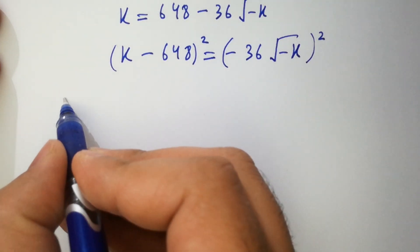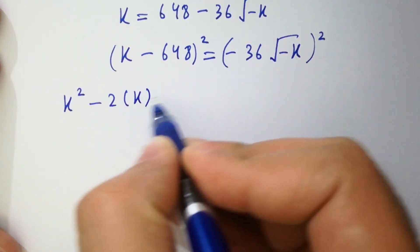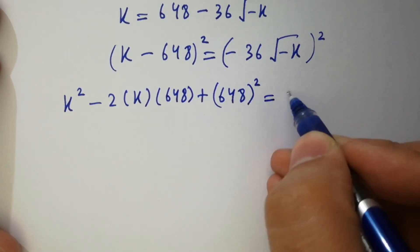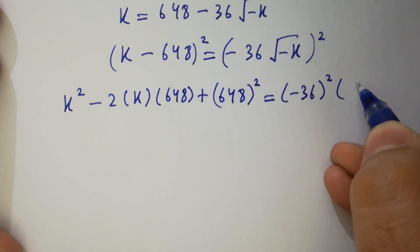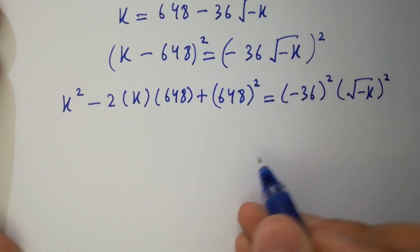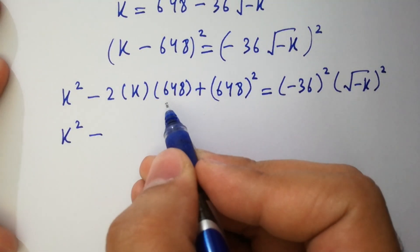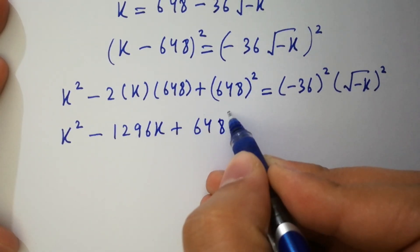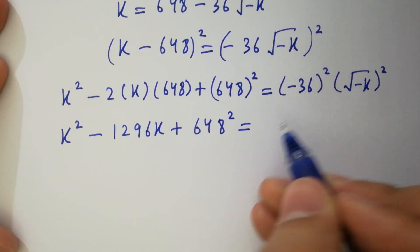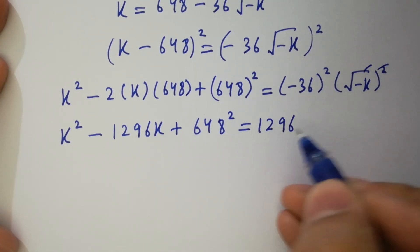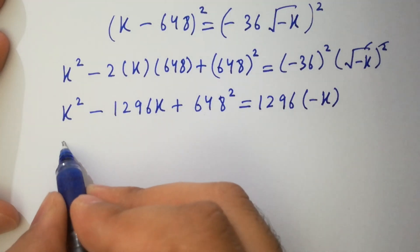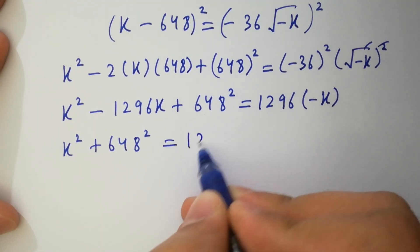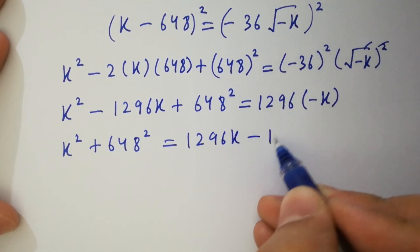Expanding, we have k square minus 2 times 648 k plus 648 square equal to 36 square times minus k, which is 1296 times minus k, giving minus 1296k. Bringing all terms to one side: k square minus 1296k plus 648 square equals minus 1296k. The minus 1296k terms cancel on both sides.